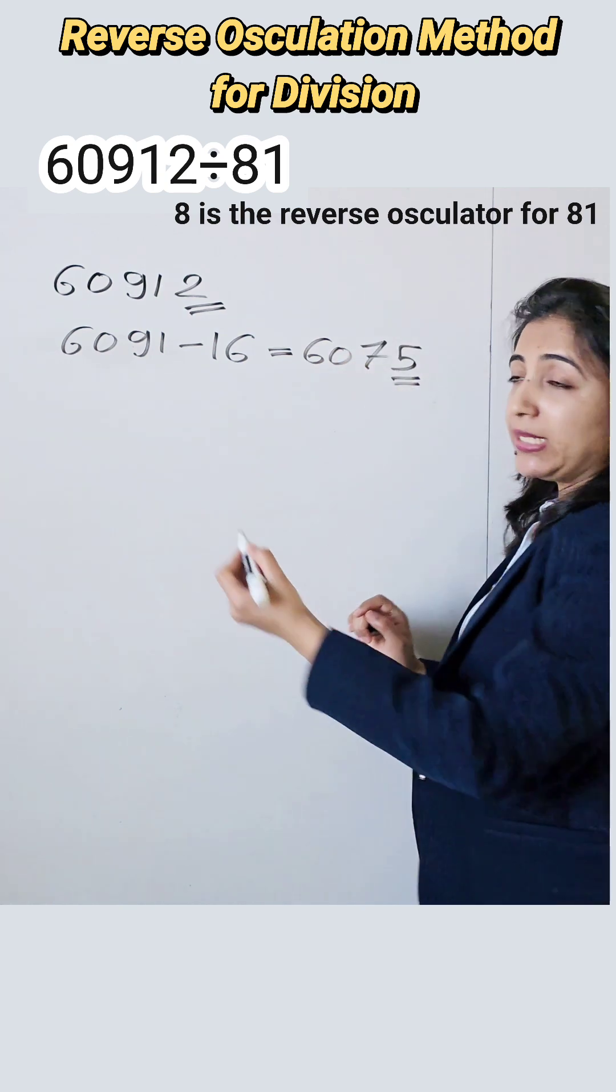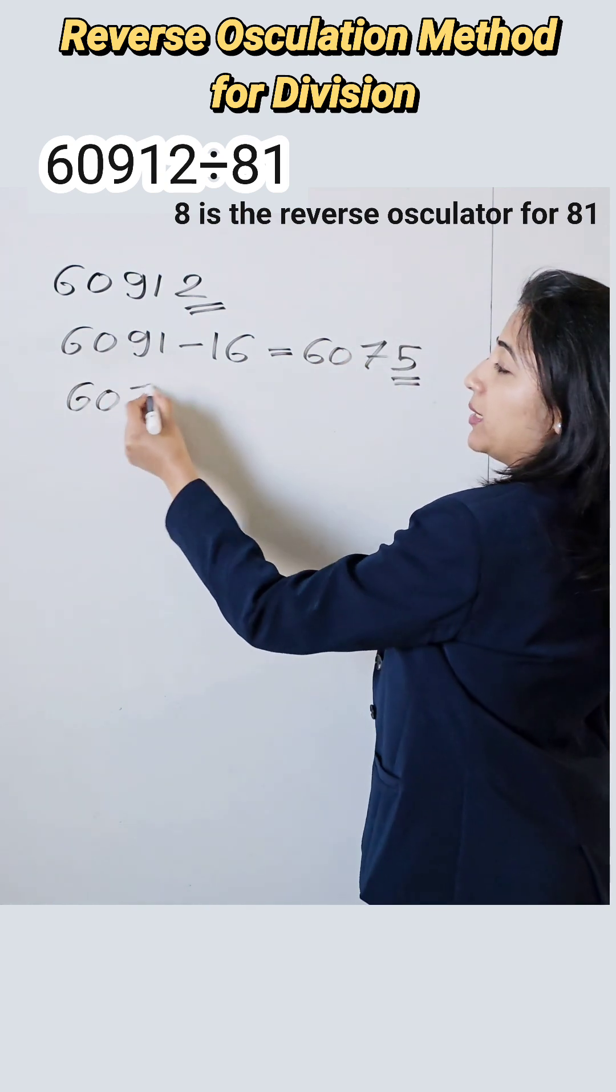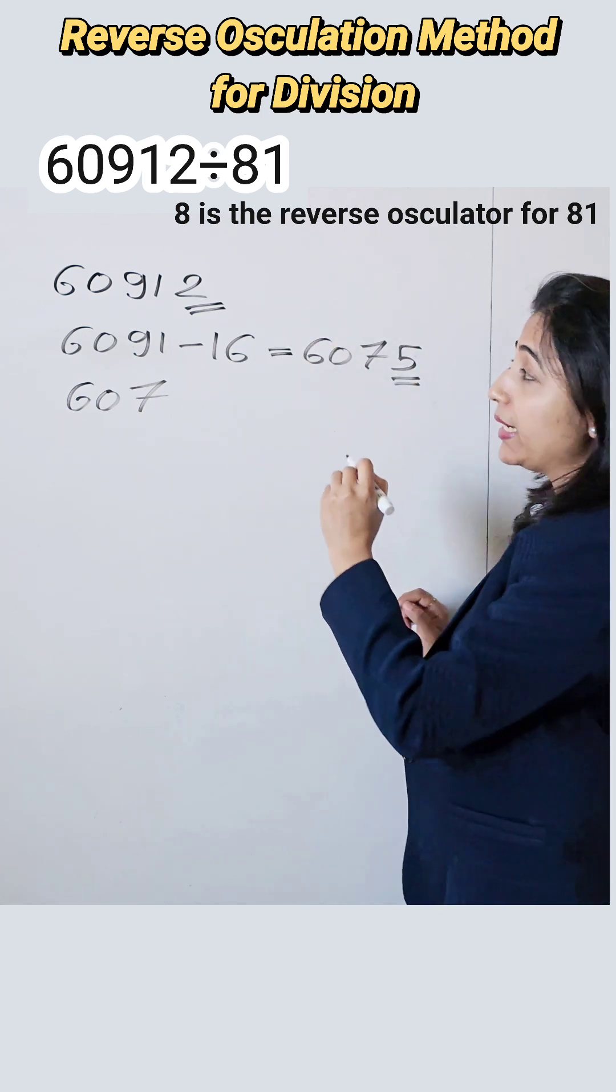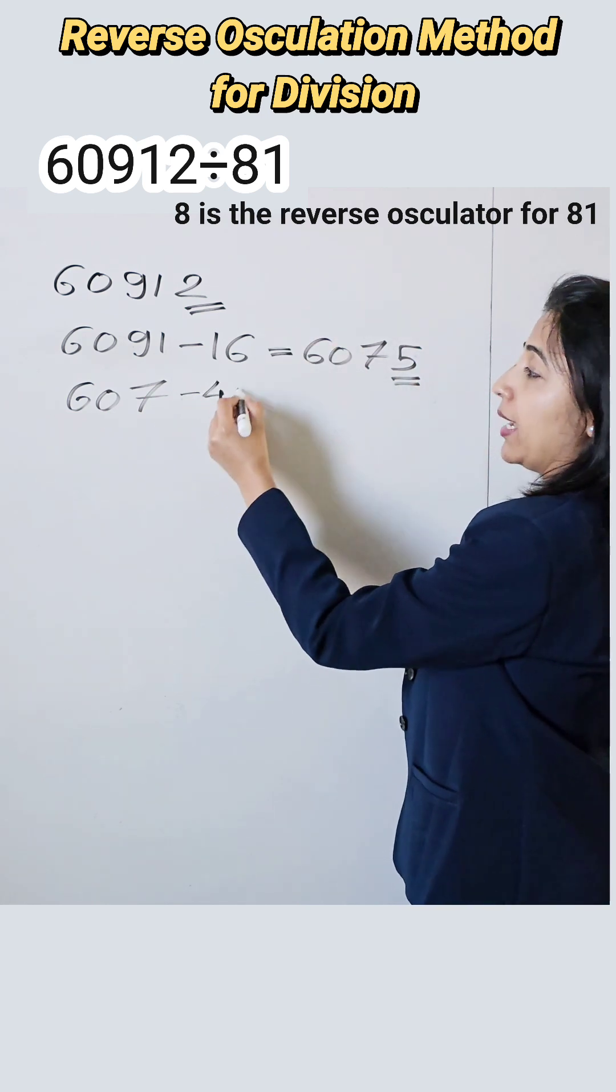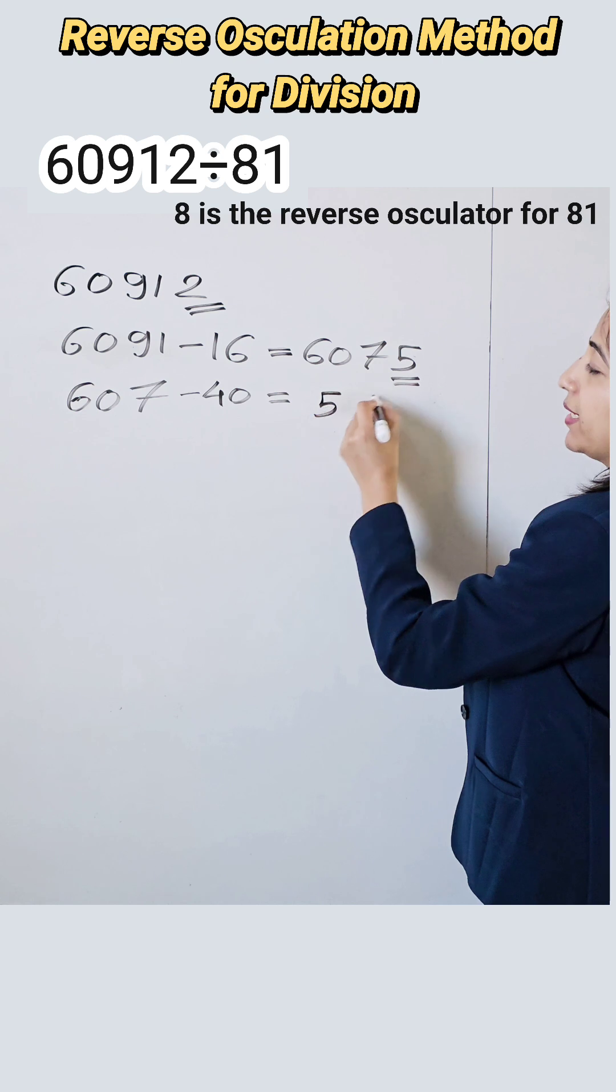Now again repeat the process. Here our remaining part of the number is 607. Last number multiplied with the reverse oscillator. So 8 into 5 is 40. Take the subtraction. So it is 567.